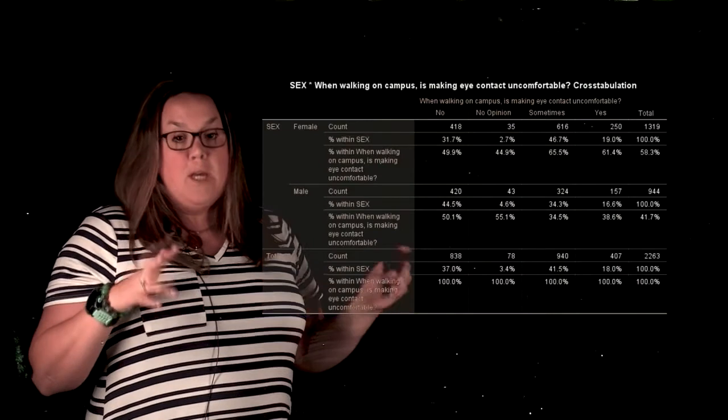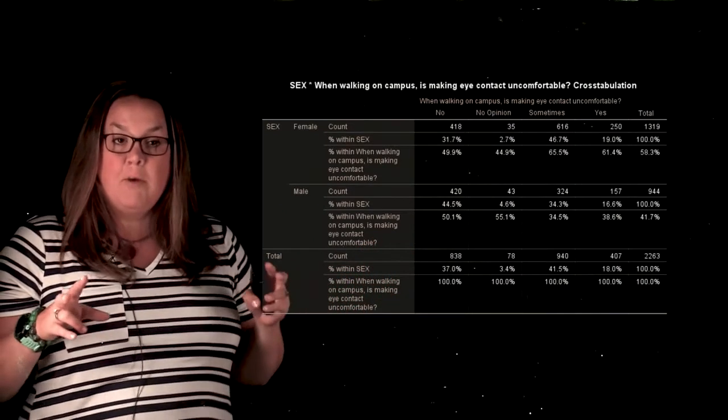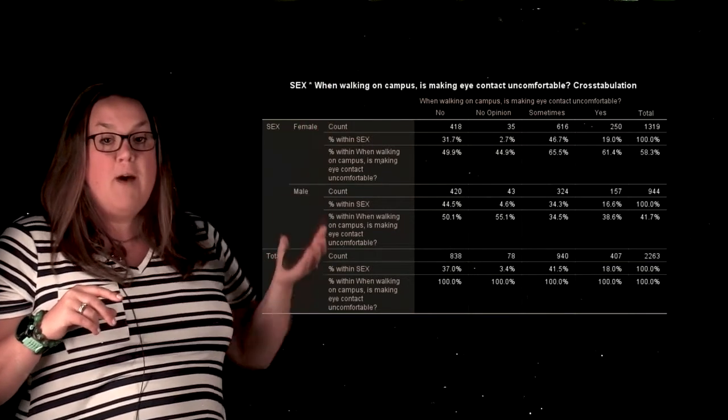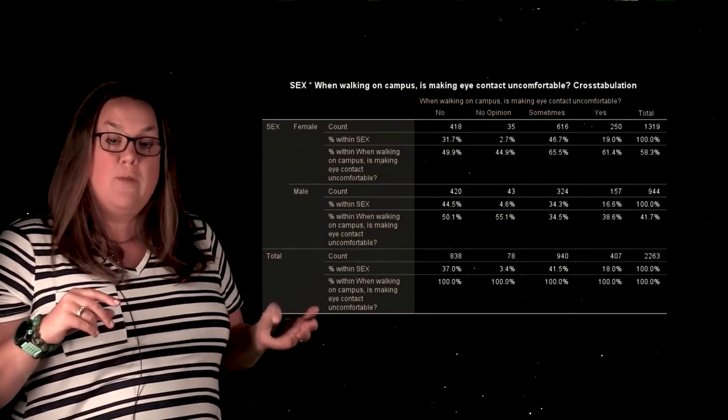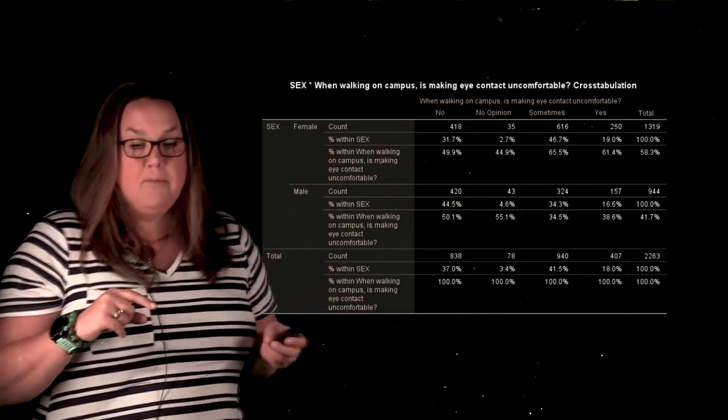Now here we have a contingency table or a two-way table, and remember that it's called a two-way table because it's representing two variables. We have our explanatory variable here in the rows, and then our response variable is represented in the columns.